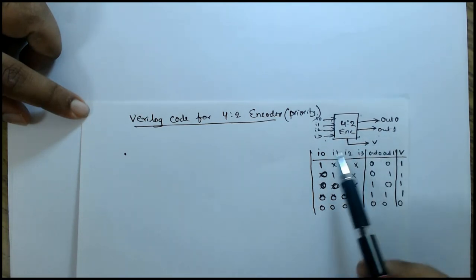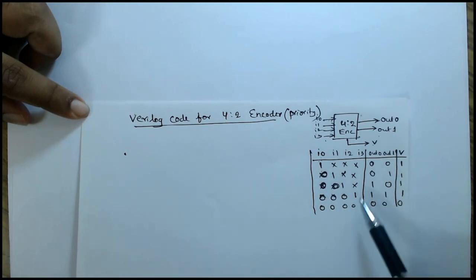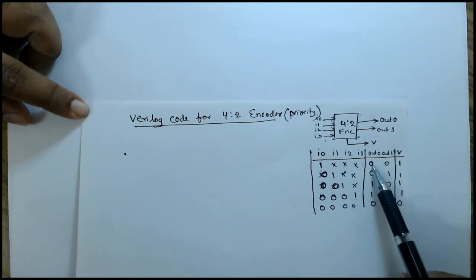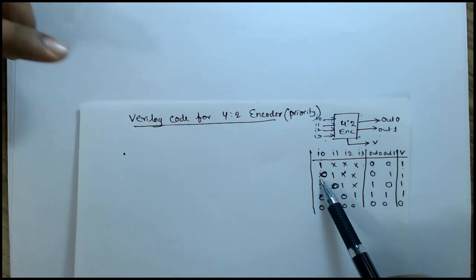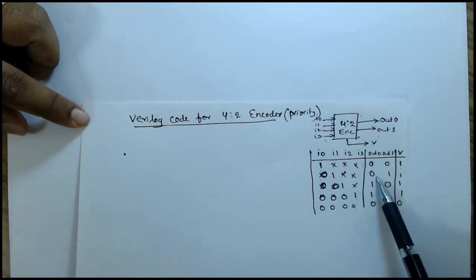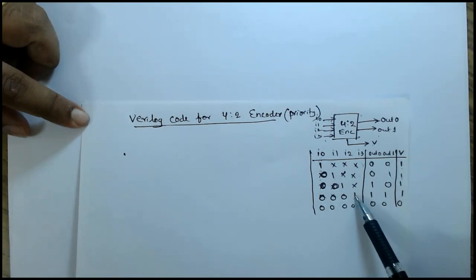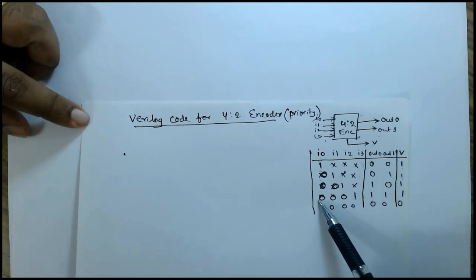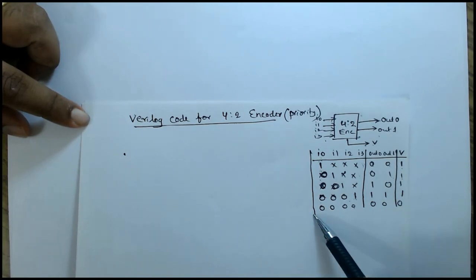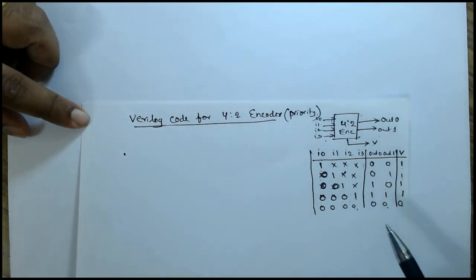We have 4 inputs, 2 outputs, and 1 valid output. I have written the inputs as i0, i1, i2, i3 — i0 being the highest priority input and i3 the least priority. When i0 is 1, irrespective of the other 3 inputs, output should be 00 and it is a valid output. When i1 is 1 and i0 is compulsorily 0, irrespective of i2 and i3, output is 01 and valid. When no input is logic 1, output is 00 and it is not a valid output.